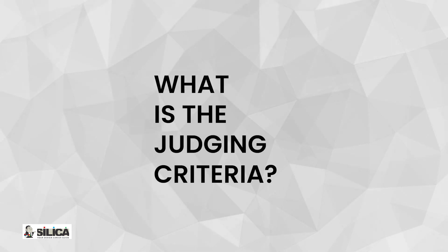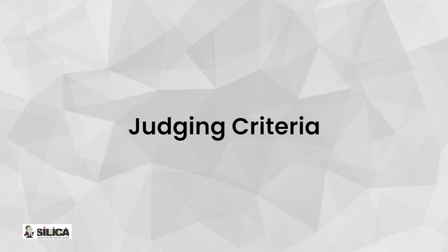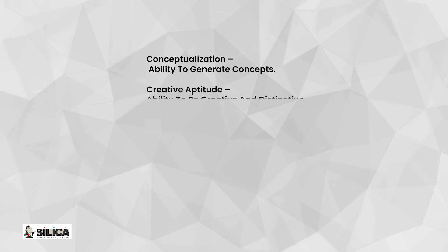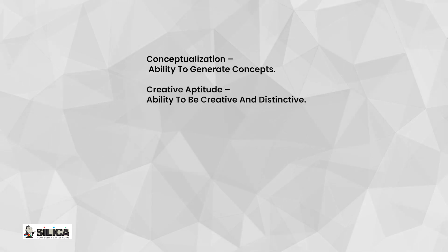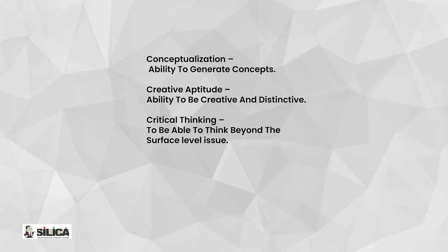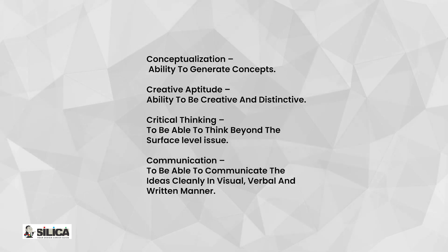What is the judging criteria? The judging criteria mainly depends on four things: Conceptualization — your ability to generate concepts; Creative aptitude — ability to be creative and distinctive; Critical thinking — to think beyond the surface level issue; and Communication — to communicate ideas clearly in a visual, verbal, and written manner.